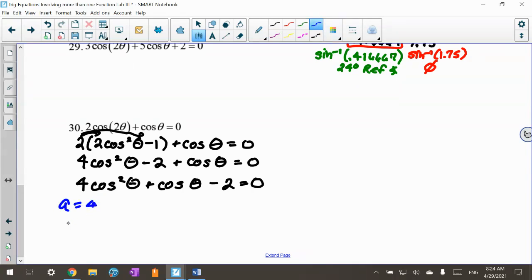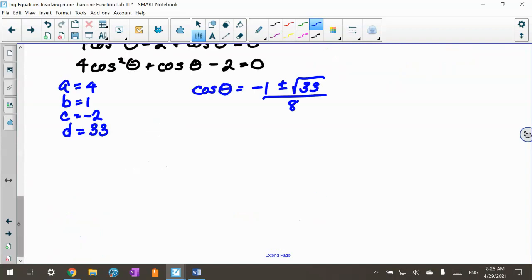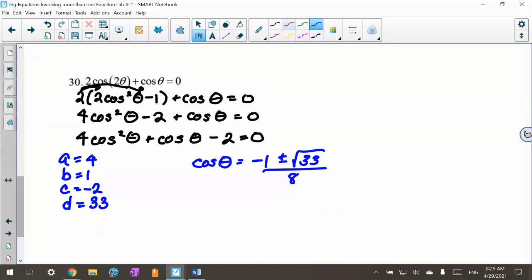So I have a is 4, b is 1, c is negative 2. And d, when I do my b squared minus 4ac for my discriminant, I get 33. Right? So I'm going to do cosine theta equals negative b plus or minus square root of 33 all over 2a or 8. So I'm going to extend this page a little bit. That's one of the reasons why I picked this one.